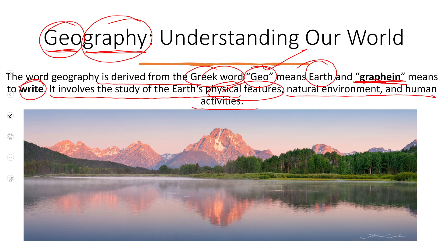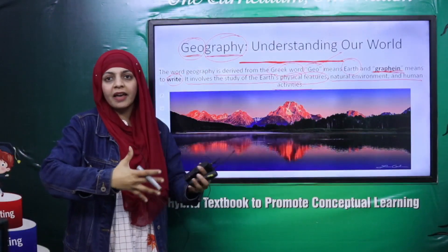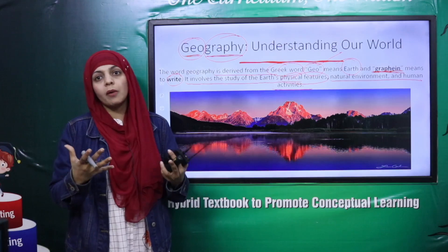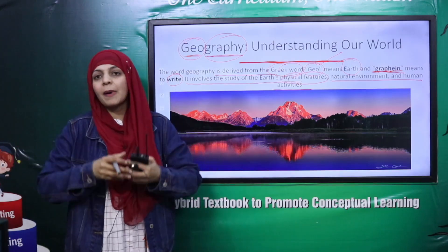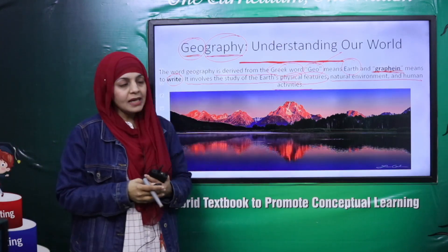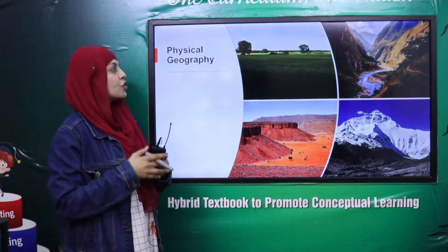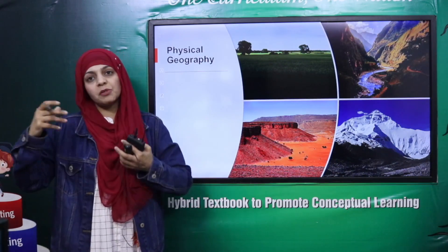So — what does the Earth look like, what is the environment like, who lives where and how they live — all of these things together are called Geography, and they are all interlinked with each other. We divide Geography into different types.